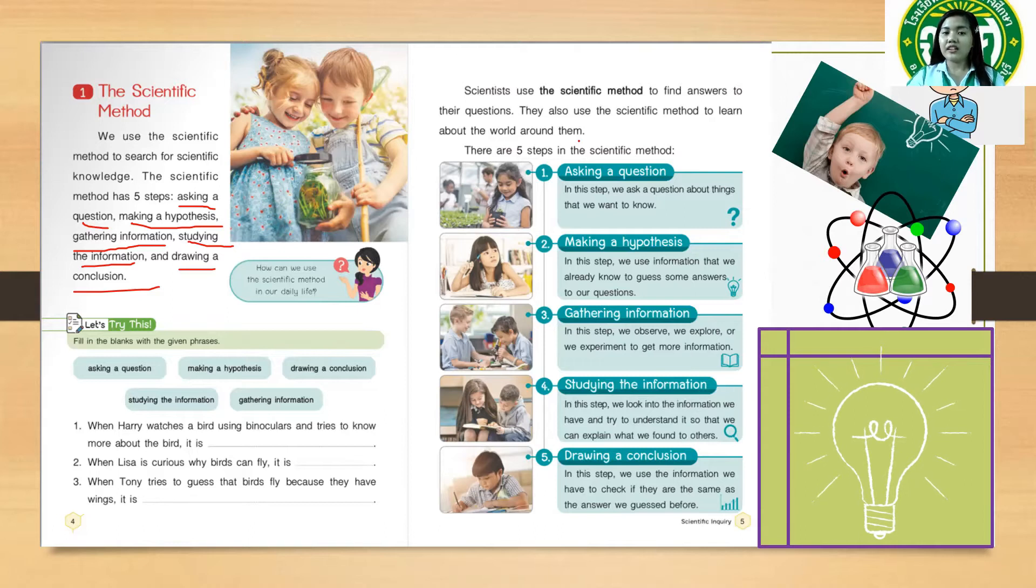Okay, so the scientific method is used by scientists to find answers to their questions. All right, so there are five steps in the scientific method. Number one: asking a question.